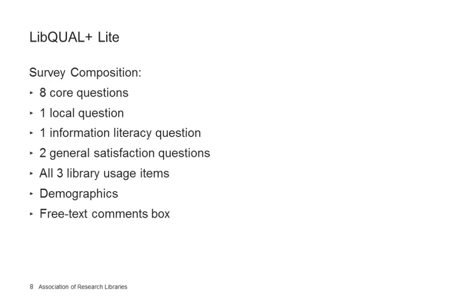On each Lite survey questionnaire, there are eight rather than 22 core questions. There is one question from each of the three dimensions that is the same on every survey, and the other questions for each dimension are randomly selected by the protocol. Each Lite questionnaire also has one of the five local questions, a sampling of information literacy and general satisfaction items, but it has all three library usage items, all demographic questions, and the free text comments box.